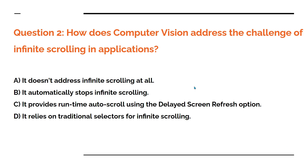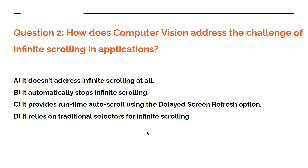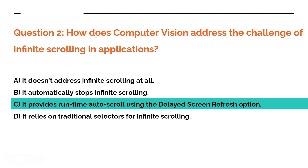Question number two: how does computer vision address the challenge of infinite scrolling in applications? Option A: it does not address infinite scrolling at all. Option B: it automatically stops infinite scrolling. Option C: it provides runtime auto scroll using the delayed screen refresh option. Option D: it relies on traditional selectors for infinite scrolling. Comment your answer. The answer here is option C — it provides runtime auto scroll using the delayed screen refresh option. We have studied this.